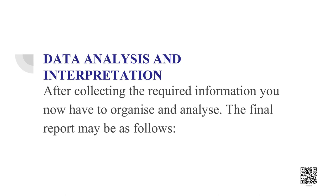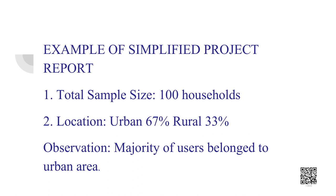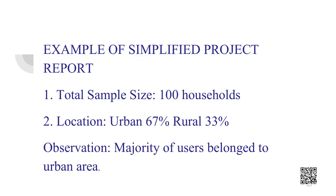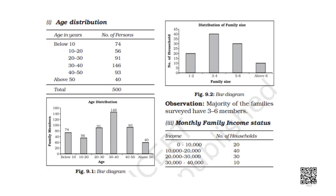Now let's analyze and interpret the data which has been obtained. After collecting the required information, we now have to organize and analyze the obtained data. The final report may be as follows: we might have surveyed around 500 households, with 67% from urban areas and 33% from rural areas. The results will be shown through various statistical tools, statistical diagrams, and graphs.